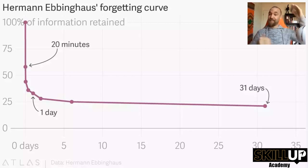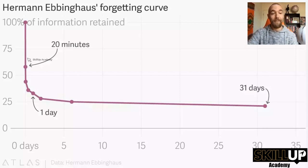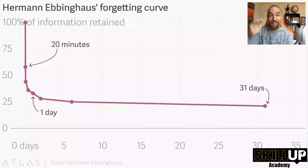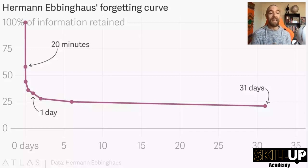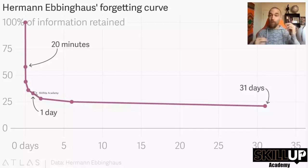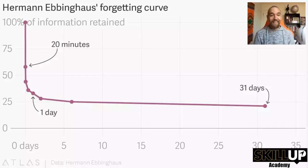I'm not sure how much you know about forgetting, but it's a very important aspect — it's the opposite of retaining. There's this curve that basically says you lose all the information you retain if you do nothing with it. Once you learn something, after 20 minutes you go from retaining pretty much everything all the way down to 60%.